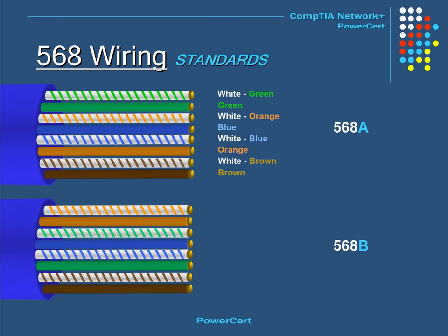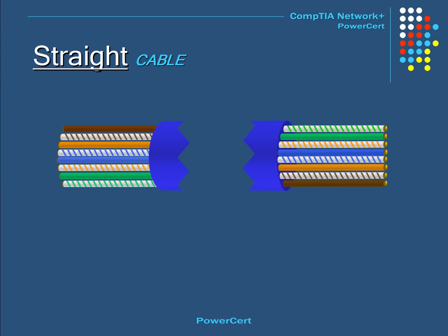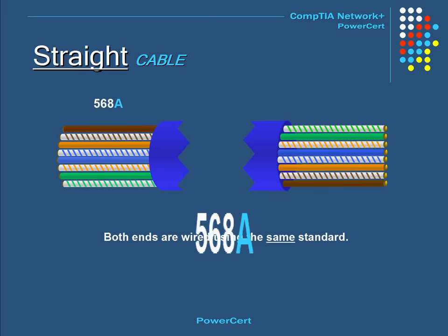The 568-B standard is wired in this order: white-orange, orange, white-green, blue, white-blue, green, white-brown, and brown. There is no difference in functionality as to which standard is used. If both ends of the cable are wired using the same standard, this is known as a straight cable. A straight cable allows signals to pass straight through from end to end — it is the most common type of cable and is used to connect computers to hubs, switches, or modems.